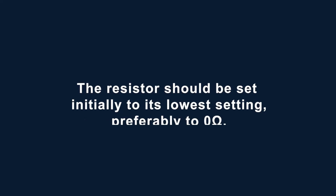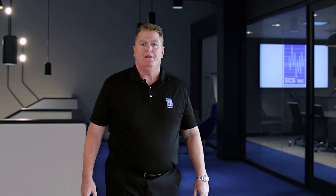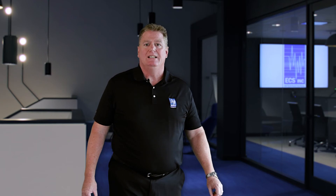The resistor should be set initially at its lowest setting, preferably close to zero ohms. The oscillator is then started and the output monitored on an oscilloscope. The variable resistor is then adjusted so that the resistance is increased while the output is continuously monitored. At some value of resistance, oscillation will stop. At this point, the variable resistor is measured to determine the ohmic value at which oscillation has ceased.